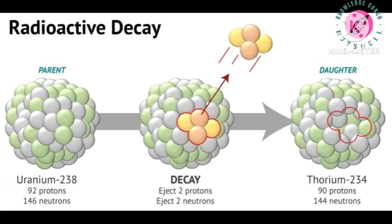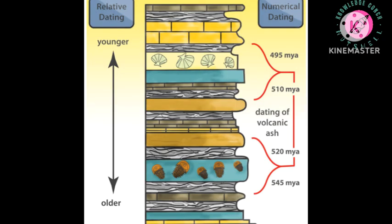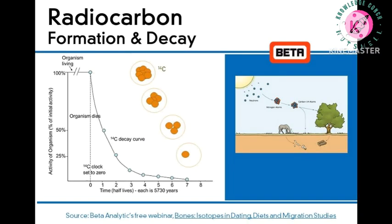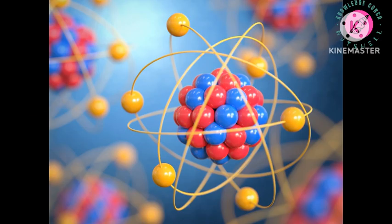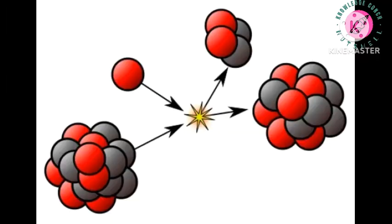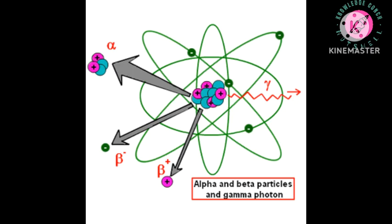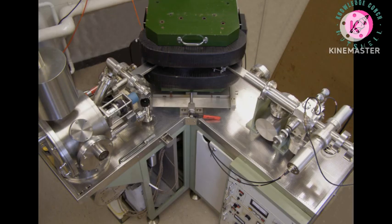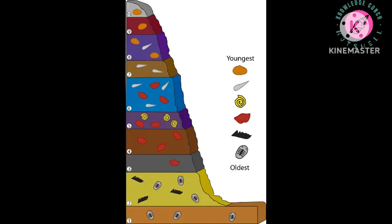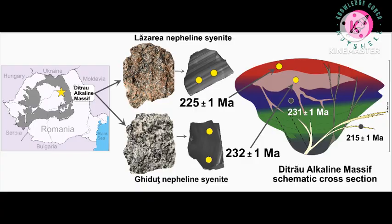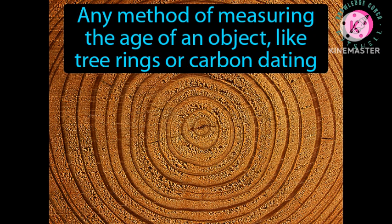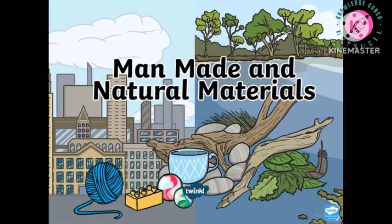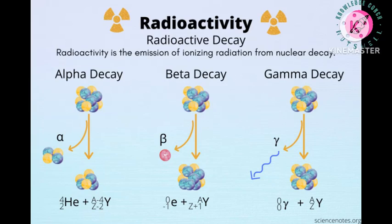Radiometric dating, radioactive dating, or radioisotope dating is a technique used to date materials such as rocks or carbon, in which trace radioactive impurities were selectively incorporated when they were formed. The method compares the abundance of a naturally occurring radioactive isotope within the material to the abundance of its decay products, which form at a known constant rate of decay. The use of radiometric dating was first published in 1907 by Bertram Boltwood and is now the principal source of information about the absolute age of rocks and other geological features, including the age of fossilized life forms or the age of Earth itself, and can also be used to date a wide range of natural and man-made materials.